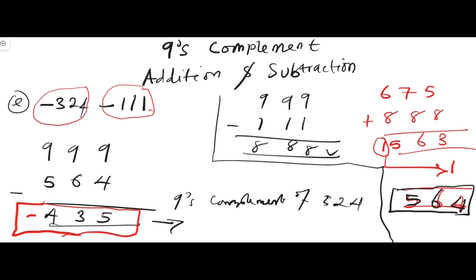The 435 is a nine's complement value, meaning it represents a negative number. The nine's complement of any number gives the negative value of that number — that is why we find the nine's complement only of negative numbers. So the final answer is negative 435. Therefore, negative 324 minus 111 equals negative 435.